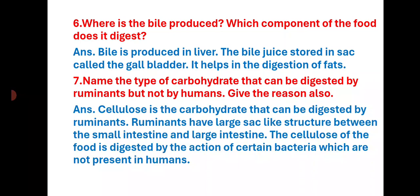Name the type of carbohydrate that can be digested by ruminants but not by humans. Give a reason. Cellulose is the carbohydrate that can be digested by ruminants. Ruminants have a large sac-like structure between the small intestine and the large intestine. The cellulose in food is digested by the action of certain bacteria which are not present in humans.